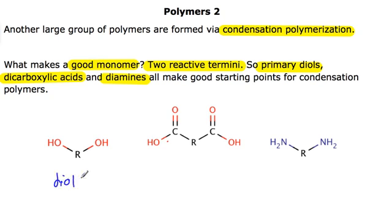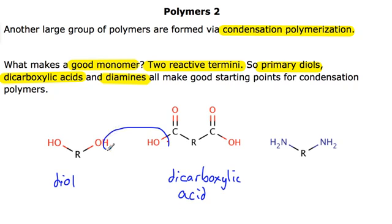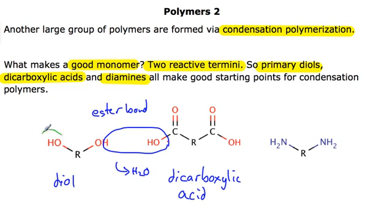Here you have a diol. That OH group will be able to react with this dicarboxylic acid. The OH group of the alcohol and the OH group of the dicarboxylic acid react — we lose water in a condensation reaction — and we form an ester bond. But importantly, the reactive OH groups remain on the ends of this new molecule, so the chain can continue to be built.